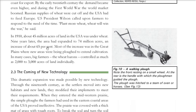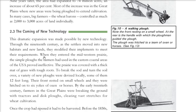In 1910, 45 million acres of land expanded after 9 years to 75 million acres for wheat — around a 65% enhancement. Most of the increase was in the Great Plains, where new areas were plowed to extend cultivation. Big farmers owned more than 2,000 to 3,000 acres of land — one person.